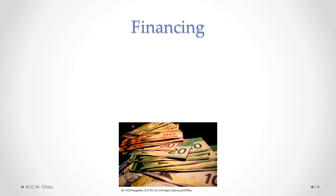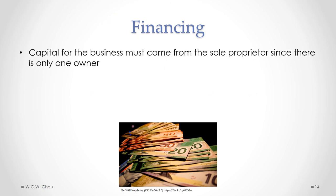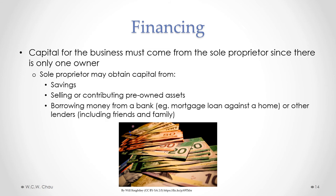Where does the financing for a sole proprietorship come from? Since there is only one owner, the capital must come from the sole proprietor. Sources include savings, selling or contributing assets already owned, or borrowing money from a lender such as a bank or friends and family. For example, a sole proprietor who owns a house could get a mortgage against it to obtain a bank loan.